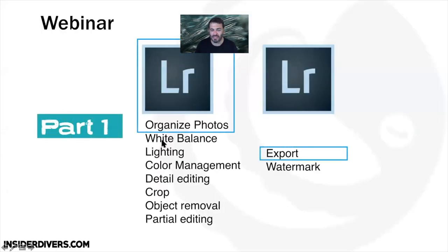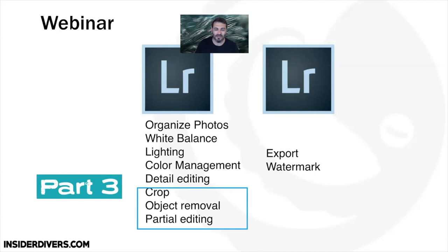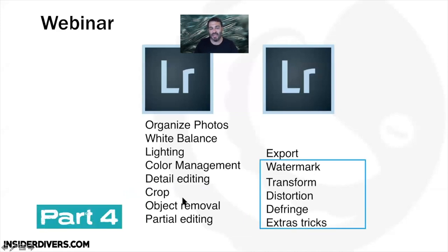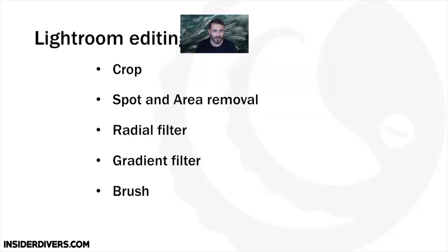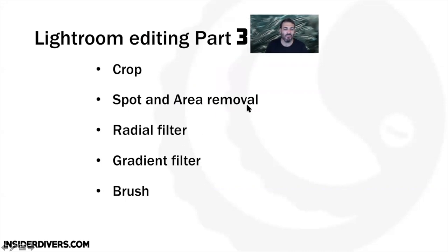So where were we: part one was organization and export, part two was a lot of the simple fine-tuning. Today we're going to do the really detailed stuff — this is where the magic happens. Crop, object removal — that's simple — but partial editing is essentially where we can really make a big difference. I've moved watermark to next week where we'll also touch on Photoshop. Today: crop, spot removal, area removal, radial filter, gradient filter, and brush.